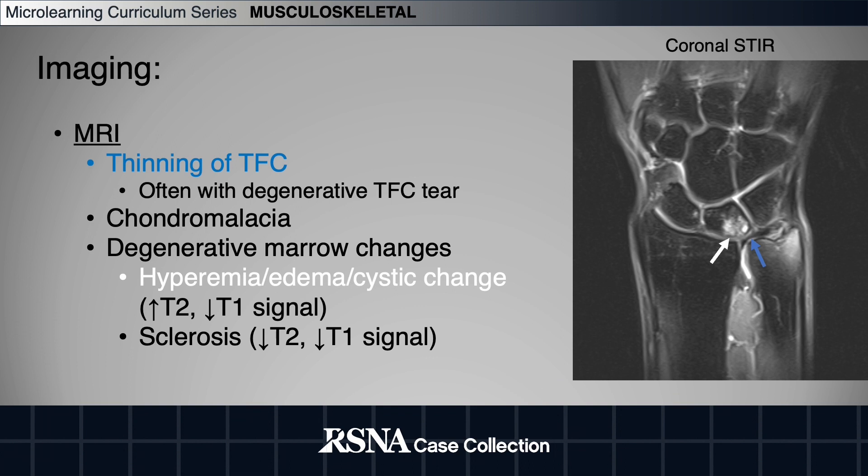In the setting of negative radiographs and a strong clinical suspicion for ulnar impaction, MR imaging is helpful in detecting occult disease. Findings of ulnar impaction on MRI include thinning of the TFC, often with a superimposed degenerative TFC tear, and degenerative marrow changes.